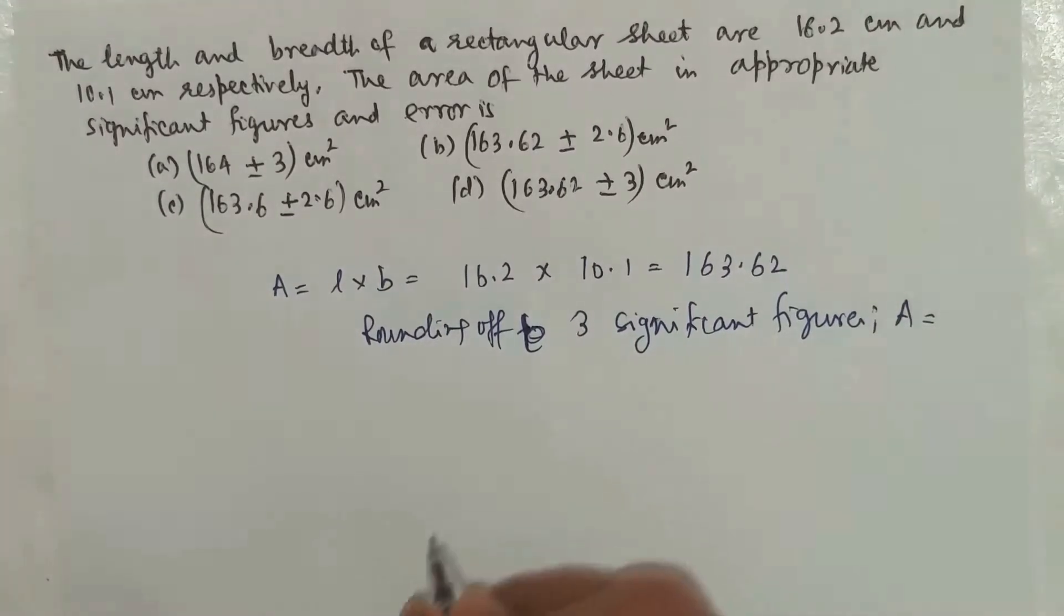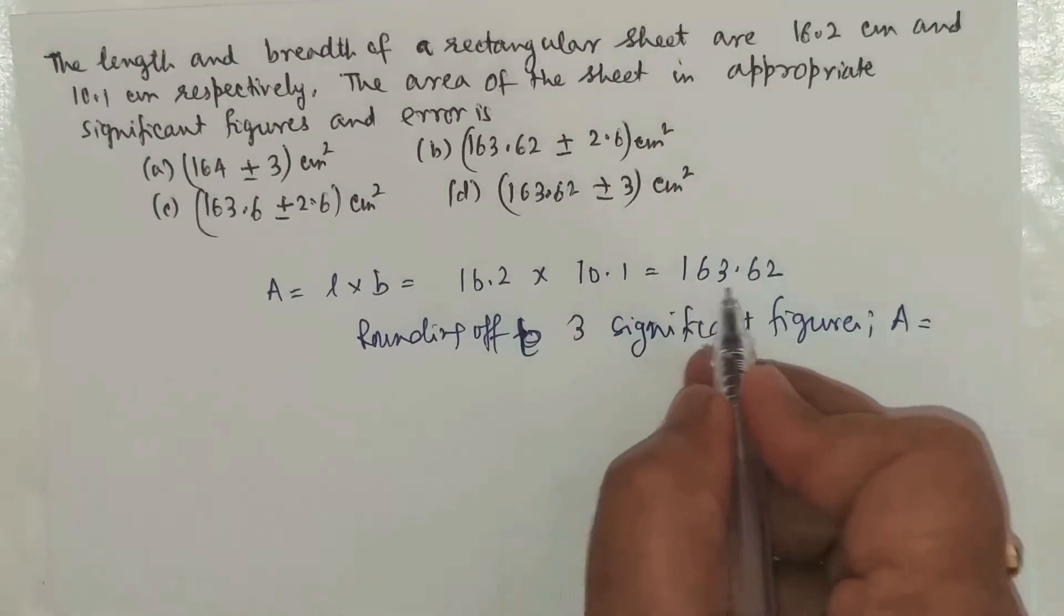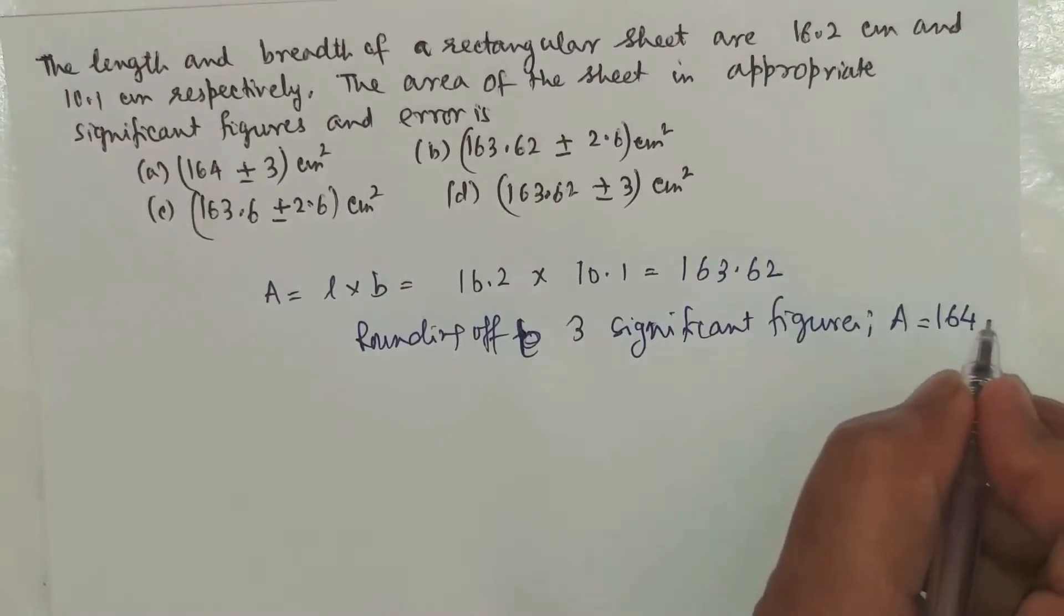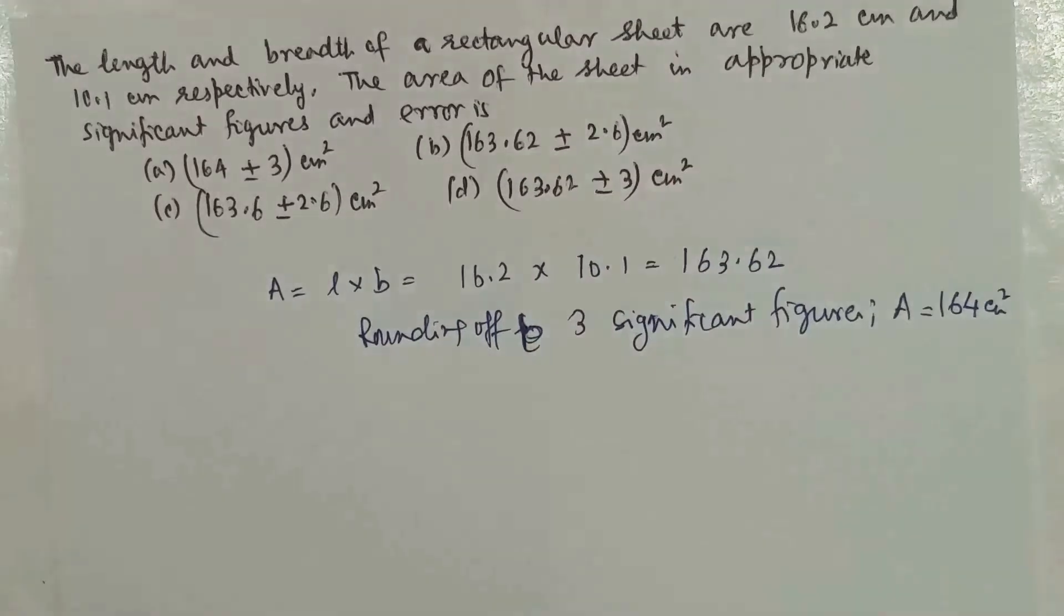We have area equal to 163.62. Rounding it off to 3 significant figures gives 164. The unit will be cm² as per the given units.